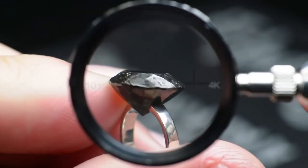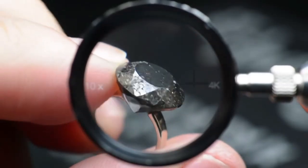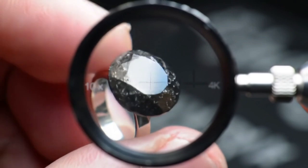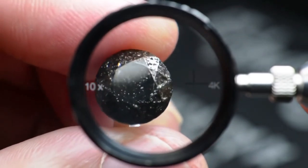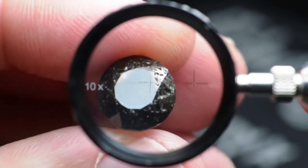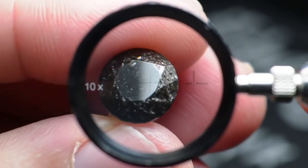Visual inspection with a loupe. Use a jeweler's loupe, 10x magnification, to look closely at the stone. Real black diamonds often have tiny inclusions and a metallic, almost opaque luster. Fake stones may appear too perfect or have bubbles inside.